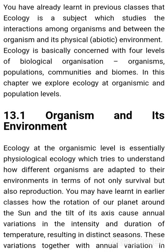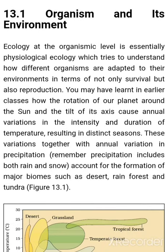You have already learned in previous classes that ecology is a subject which studies the interactions among organisms and between the organisms and their physical environment. Ecology is basically concerned with four levels of biological organization: organisms, populations, communities, and biomes. In this chapter we explore ecology at the organism and population levels. Ecology at the organismic level is essentially physiological ecology, which tries to understand how different organisms are adapted to their environments in terms of not only survival but also reproduction.